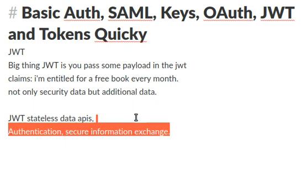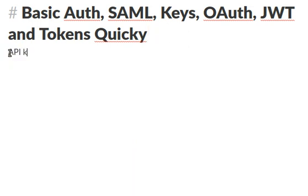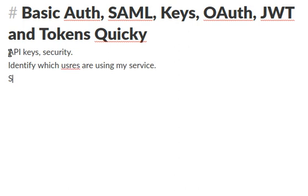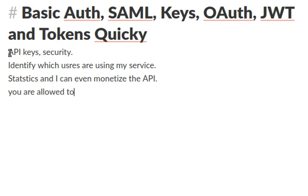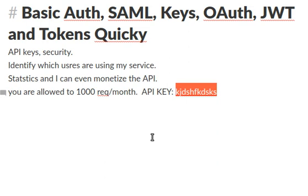API keys are also another very important concept. If you register with some service — for example, the Twitter API — then you get API keys. These are good not only for access and authorization and security; they are also good to identify which users are using your service, so you can do statistics. You can even monetize the API because you can tell a user they are allowed 1,000 requests per month, and you monitor that API key.